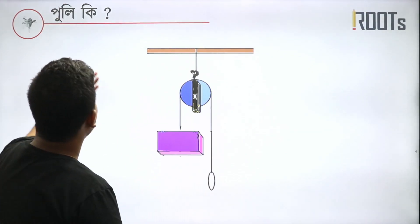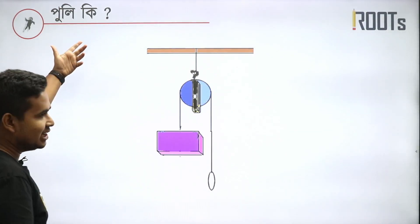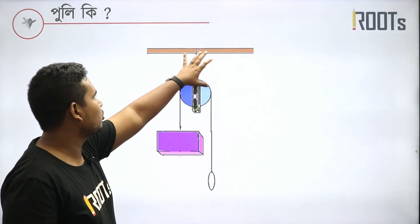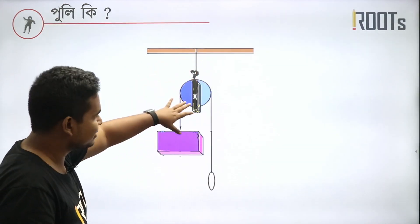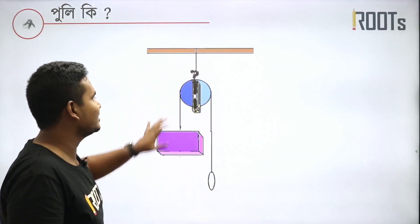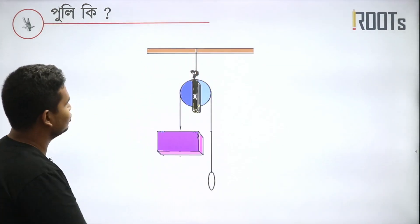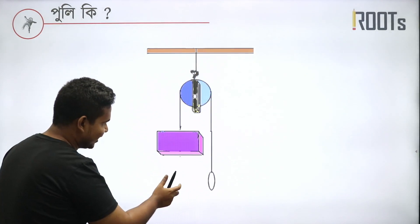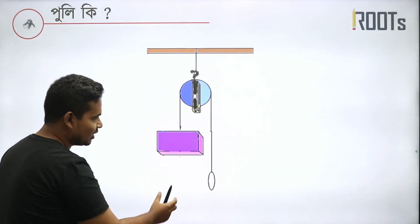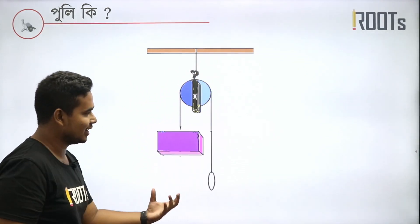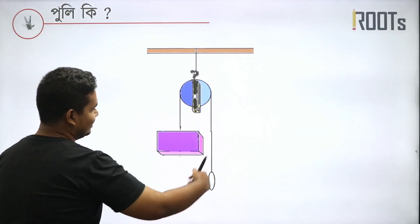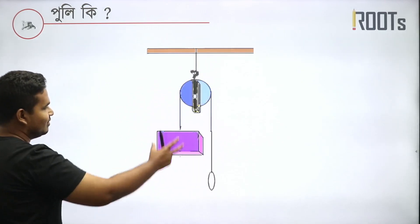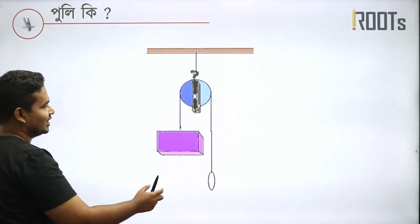Look, the pulley is very important. The pulley is a mechanical system. It has a heavy weight and a lighter weight. The heavy weight is fixed.